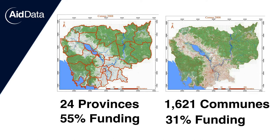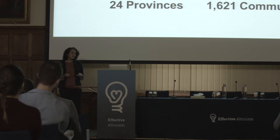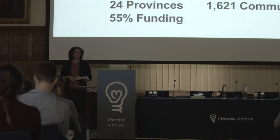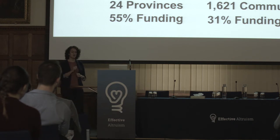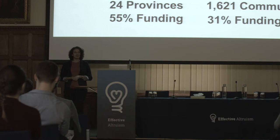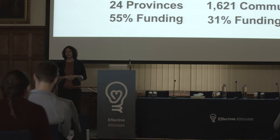Incorporating geospatial data into allocation decisions could help improve the ability of foreign aid investments to actually reach poor populations. A 2007 study in the Journal of Development Economics modeled the impact of using sub-national geographic targeting in Cambodia. They found that the same poverty alleviation achievable by a uniform transfer to all members of the population could be achieved with just over half the cost by targeting at the province level, and less than a third of the cost by allocating according to poverty at the commune level.